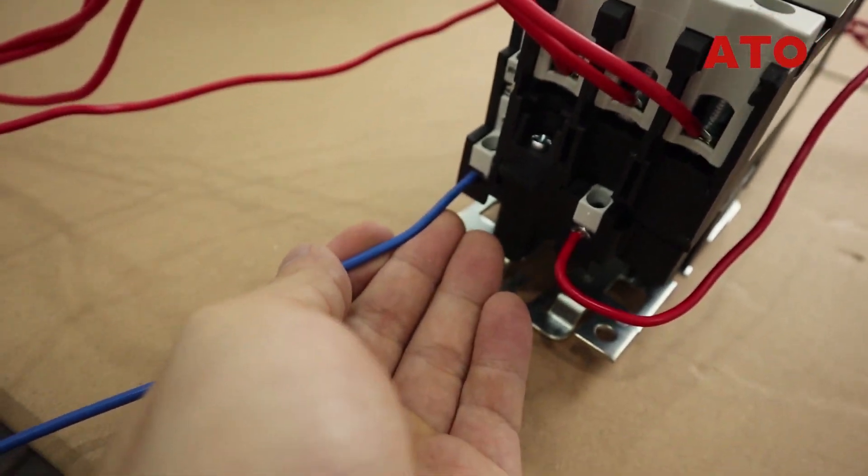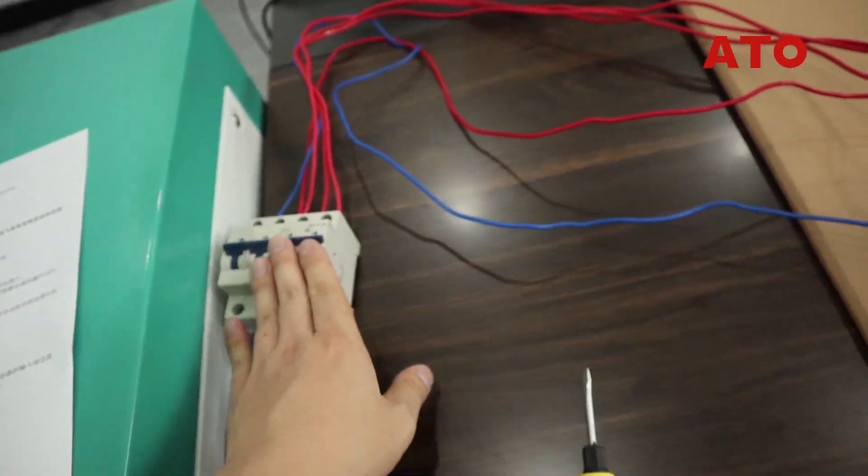And a blue wire goes from the contactor to the power supply so that a circuit is formed.